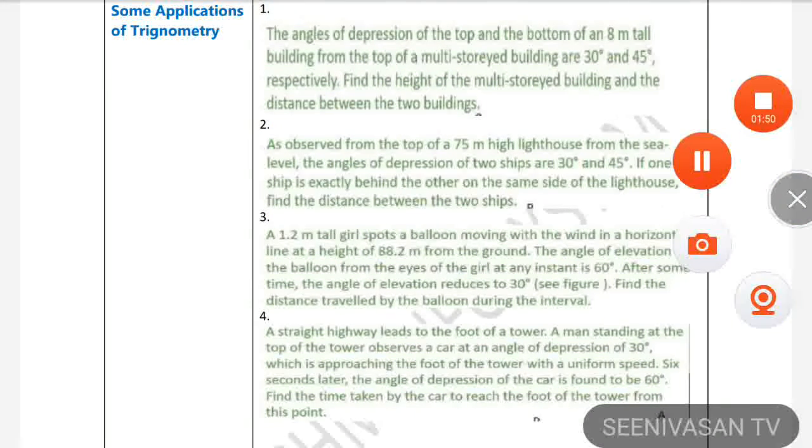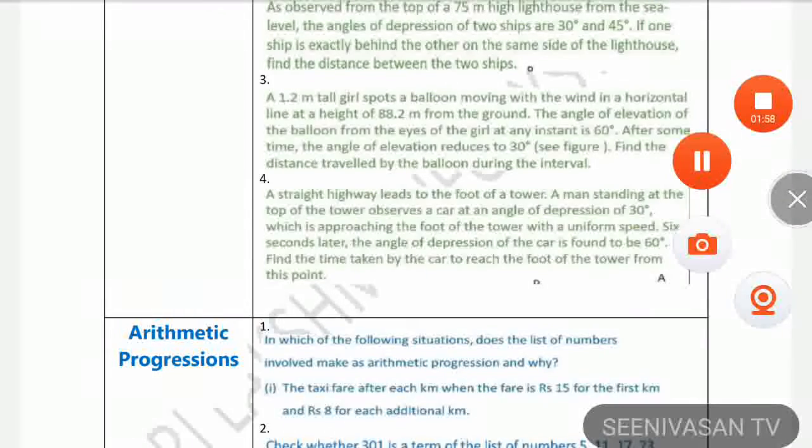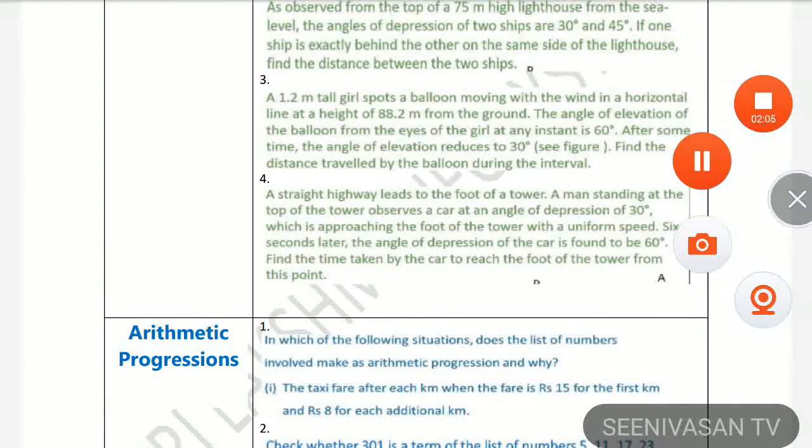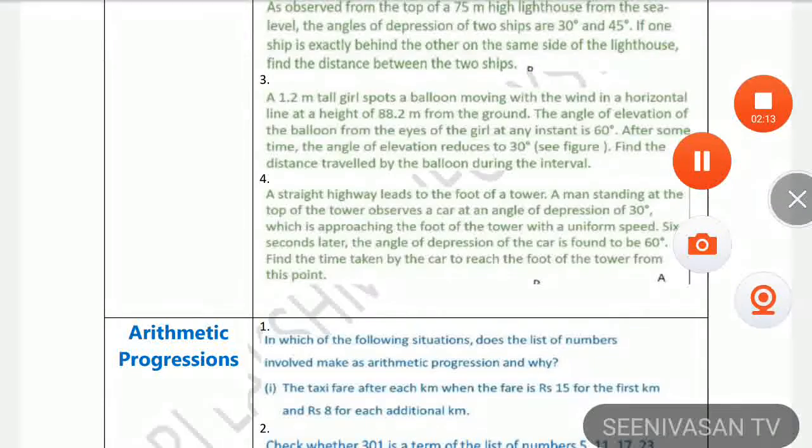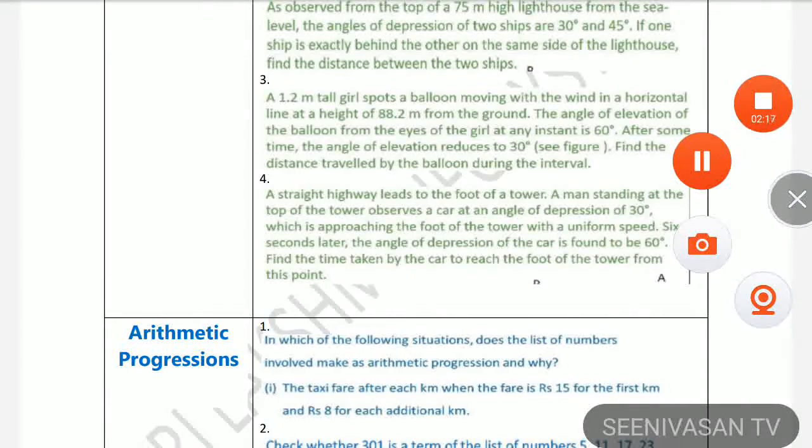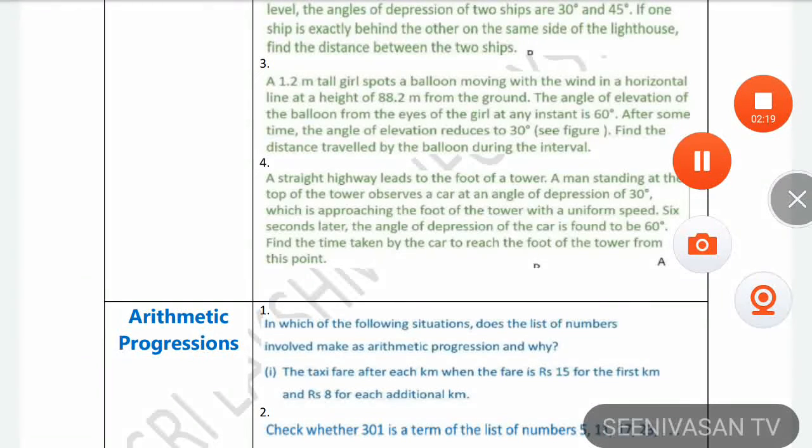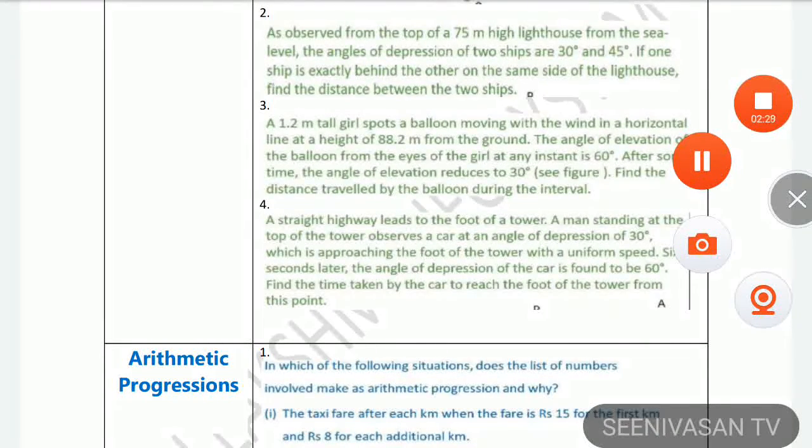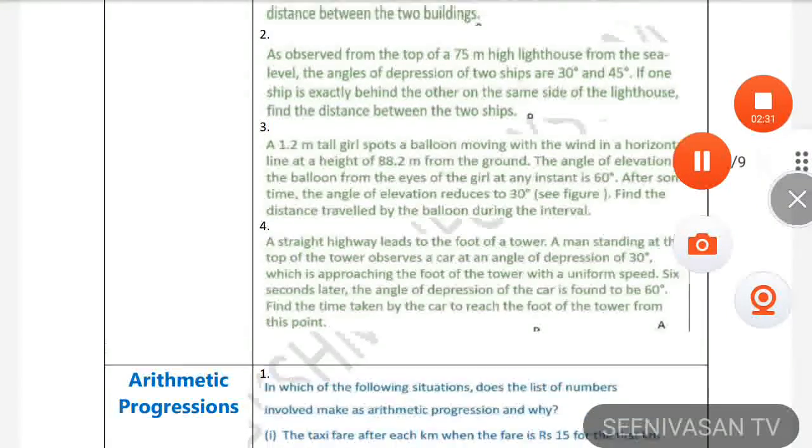If you have a picture of the NCERT book, you can see a picture of the book. The important question is: A straight highway leads to the foot of a tower. A man standing at the top of the tower observes a car at an angle of depression of 30 degrees which is approaching the foot of the tower with a uniform speed. Six seconds later, the angle of depression of the car is found to be 60 degrees. Find the time taken by the car to reach the foot of the tower from this point.